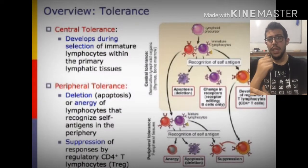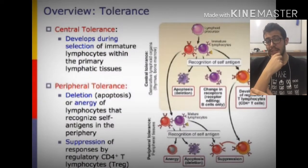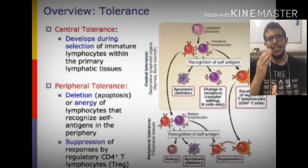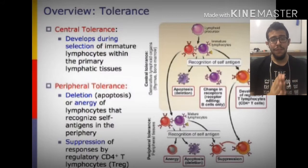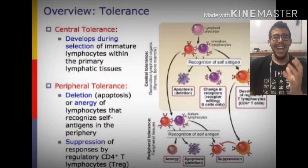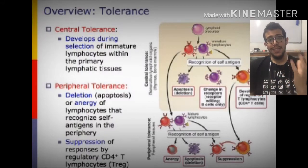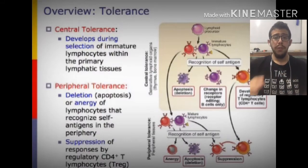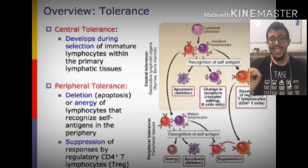Central tolerance is a developmental stage within the life cycle of lymphocytes. It ensures that these lymphocytes can distinguish between self and non-self cells. This is extremely important to prevent autoimmune diseases.